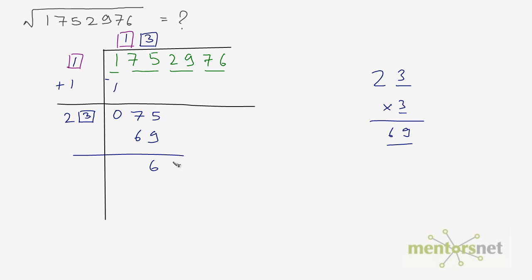Now keep in mind that whenever you write numbers in these boxes, the numbers should be same. There should not be different numbers. So 23 times 3 is 69, 75 minus 69 you get 6. So 26 and this group comes down 29. Now you have to add this number to this number. So 23 plus 3 is 26.